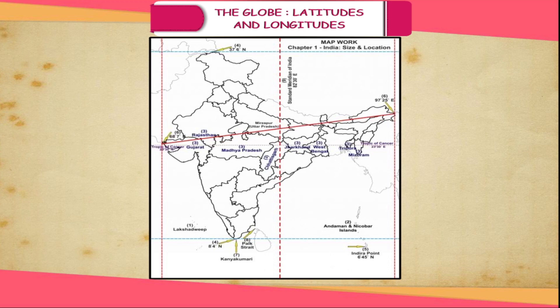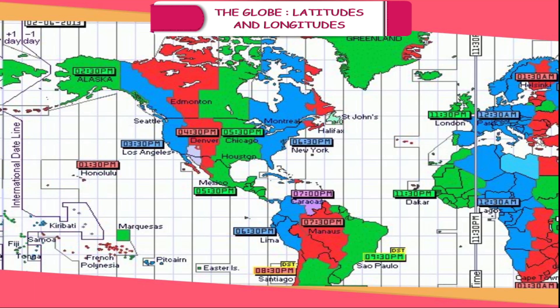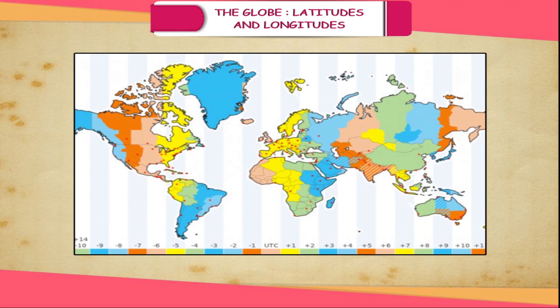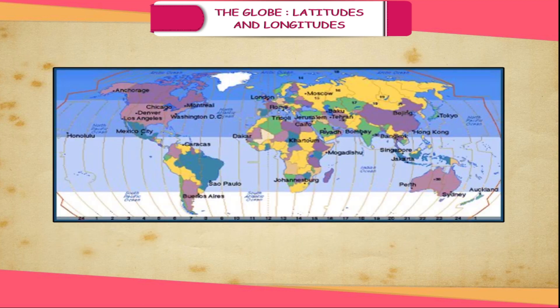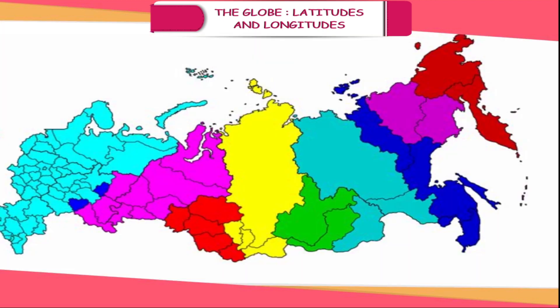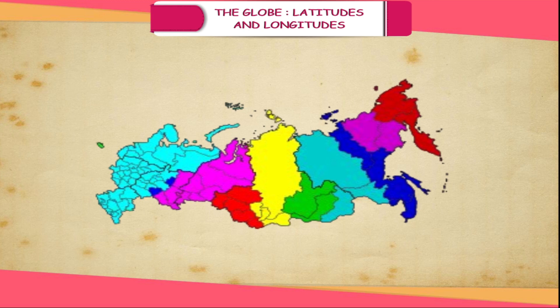Time zones of the world: A time zone is a north-south section of the Earth in which all clocks show the same time. The world's standard time was discussed at the International Congress held in Washington; consequently, the world was divided into 24 time zones of one hour each. Some large countries like the USA and Russia have adopted more than one standard time due to their large longitudinal extent. For example, the USA has nine standard time zones while Russia has as many as 11 standard times.